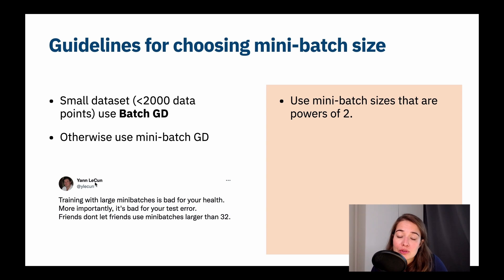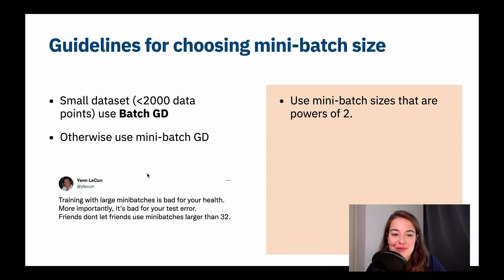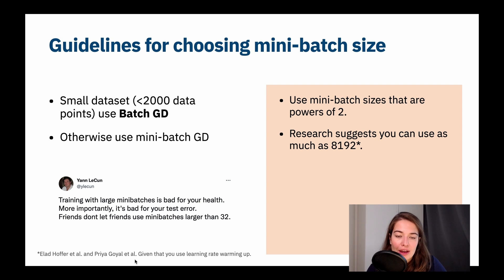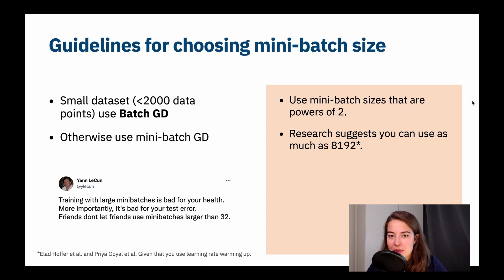Interestingly, the person behind the LeCun initialization tweeted about a paper on deciding mini-batch size, saying 'friends don't let friends use mini batches larger than 32.' That view is featured in a lot of places. However, other research suggests that if you're using learning rate scheduling or warm-up, you can use mini-batch sizes as high as 8,192 — though some researchers argue you can go much higher than 32.